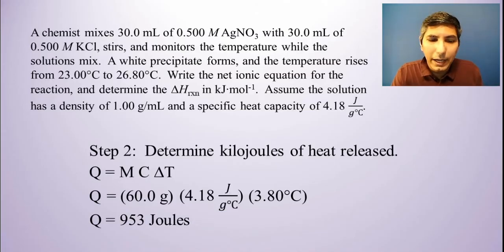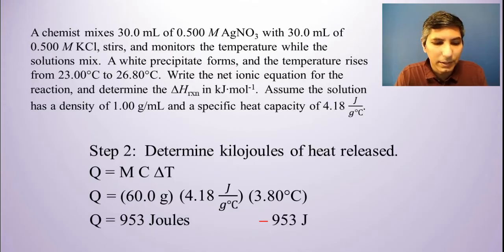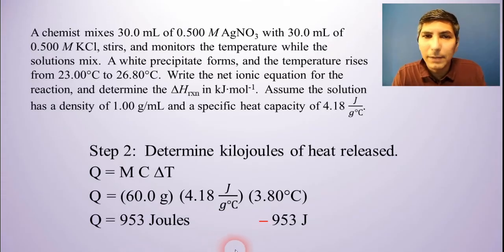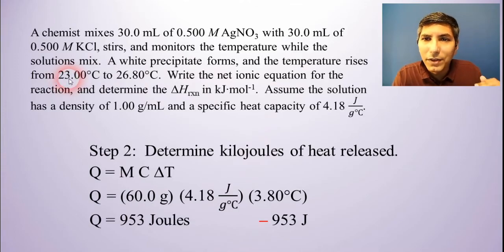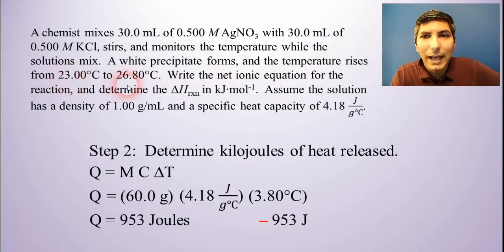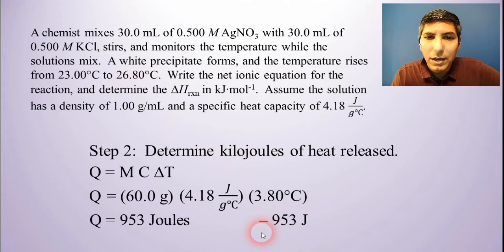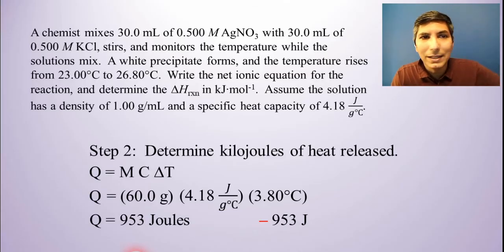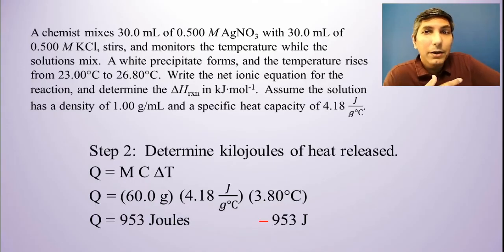Now, I'm going to go ahead and turn this into a negative 953 joules. Now, there are a couple reasons for this. And some students get a little confused as to why we do the sign change. A couple ways to think about this. The first way is think about this as the fact that this is an exothermic process. If the temperature of the solution is rising, that tells us that this has to be exothermic. So the delta H is going to have a negative value. So heat is released. So I'm going to put a negative there. So anytime you have a temperature rising in that solution, it's got to be exothermic. Delta H is negative.